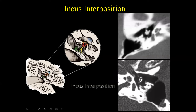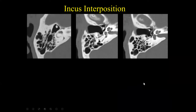Here's another example of an incus interposition. We can see the head of the malleus, the manubrium of the malleus, and the incus interposition — the remodeled incus — with its short process. Just deep to this is the capitulum of the stapes, which is attached to the stapes. You can see the wedge-shaped appearance of the remodeled incus on the bottom right image. An incus interposition is a specific type of partial ossicular replacement prosthesis in which the incus is remodeled. Here, another example shows the head of the malleus, the incus, and the anterior and posterior cruses of the stapes with ossicular integrity maintained.